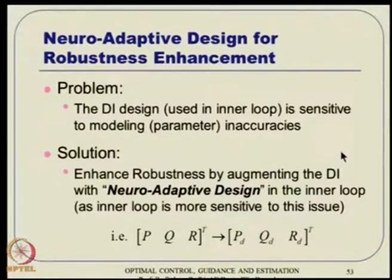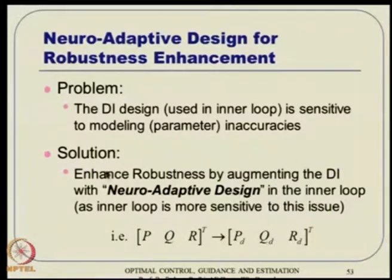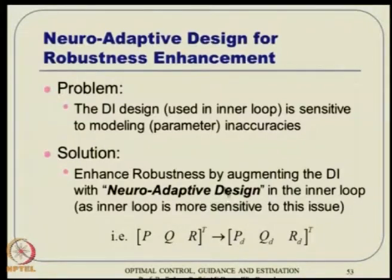What about the robustness part — sensitivity with respect to modeling or parameter inaccuracy? We have proposed incorporating neuro-adaptive design in the inner loop only. That means in the rotational dynamics, where fin deflections are generated, if that is done properly, everything else will be taken care of. This is done through neuro-adaptive design.